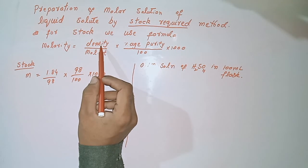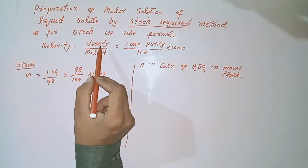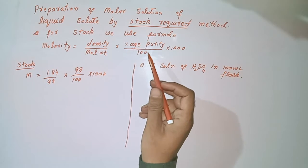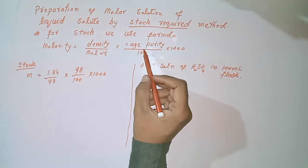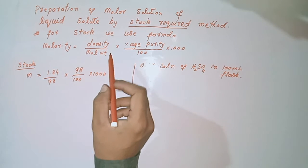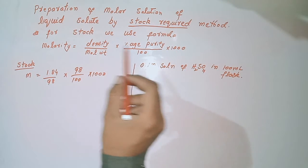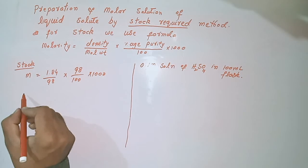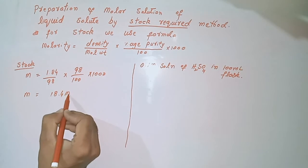We can find the density of sulfuric acid by searching on the internet, and the percentage purity of sulfuric acid is written on the bottle that exists in the lab. From the bottle of sulfuric acid we get the density and percentage purity. Using these values, the molarity works out to 18.4 molar.